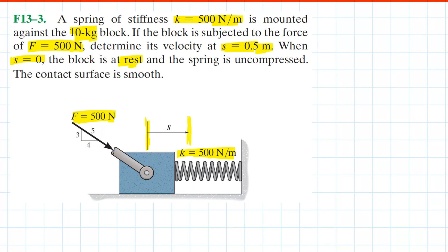At rest means the initial velocity is zero and the spring is uncompressed. The contact surface is smooth, meaning we are not considering friction in this problem. Our goal is to find the velocity of the block when the position is 0.5 meters — that is, velocity as a function of position.